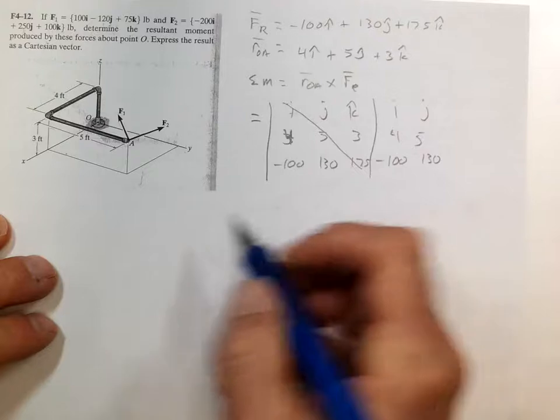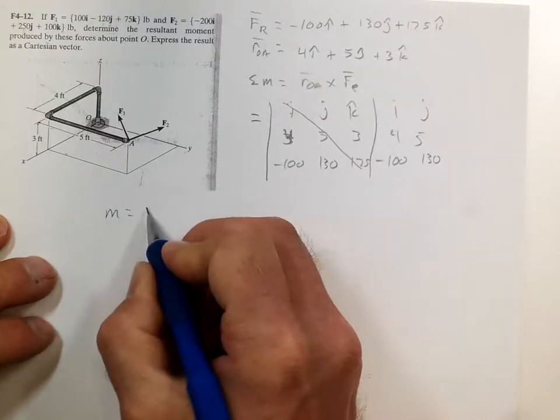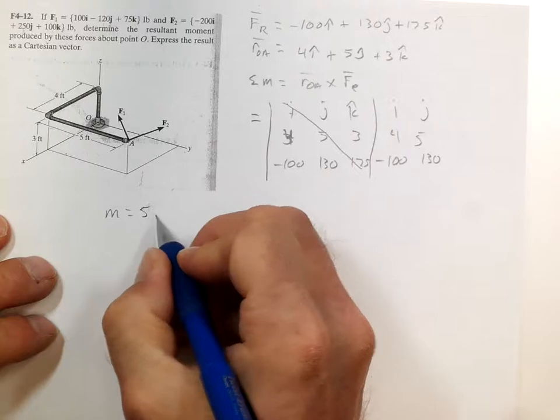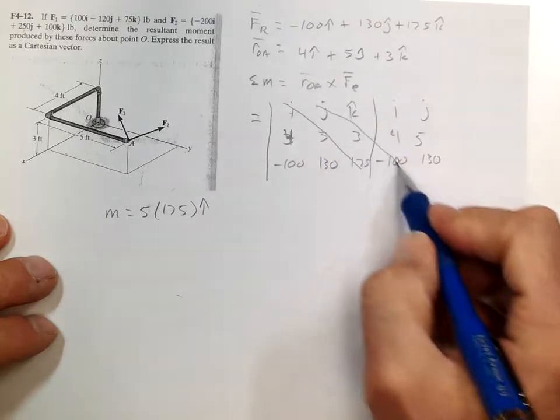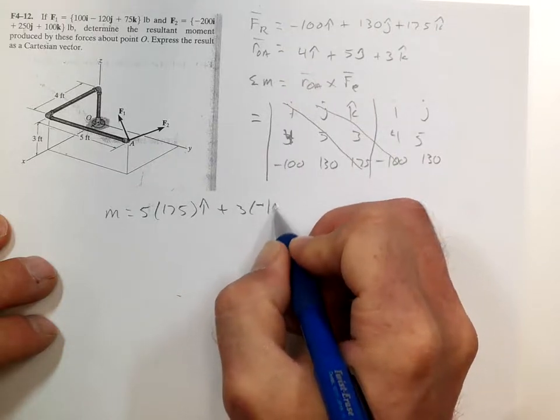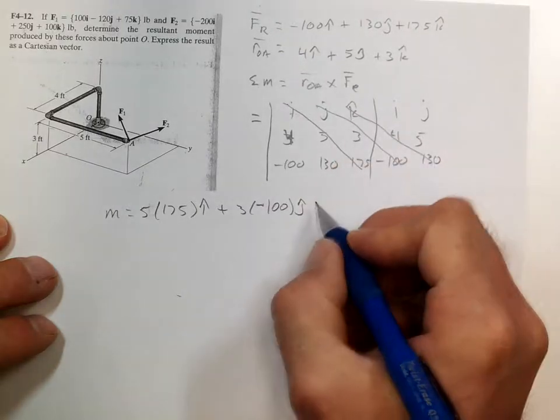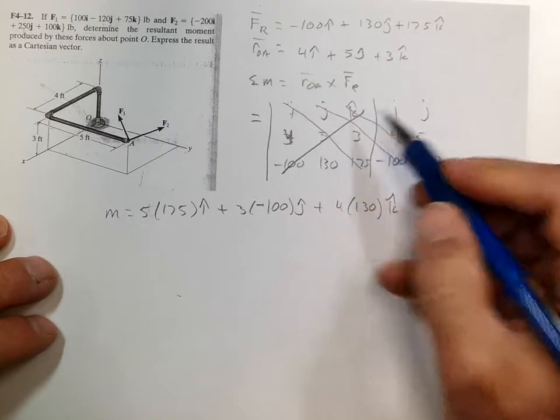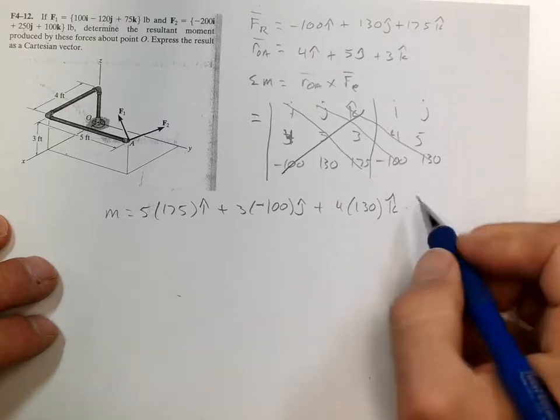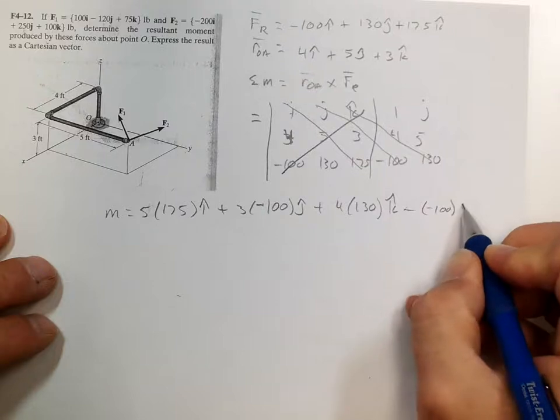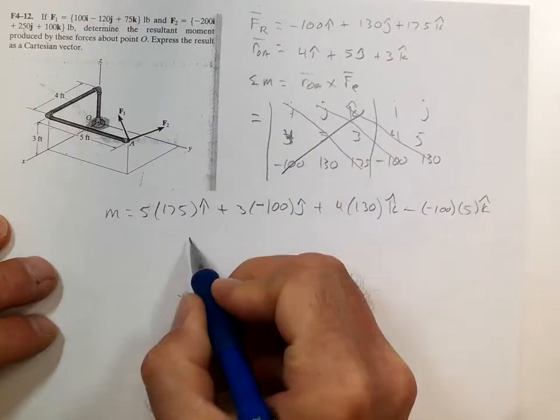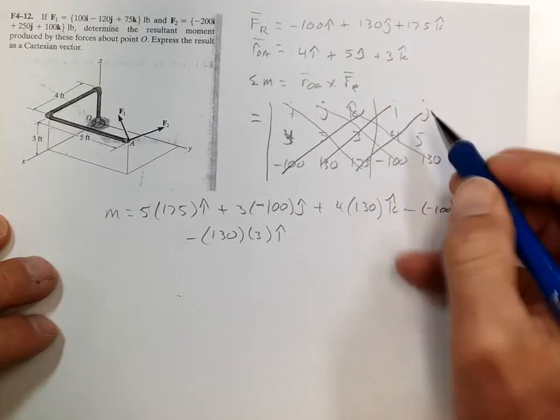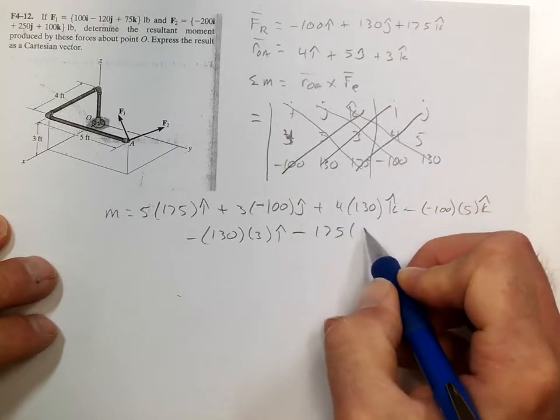So the moment equals 5 times 175 in the i, plus 3 times negative 100 in the j, plus 4 times 130 in the k, minus negative 100 times 5 in the k, minus 130 times 3 in the i, minus 175 times 4 in the j.